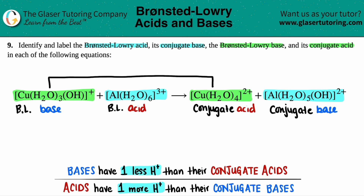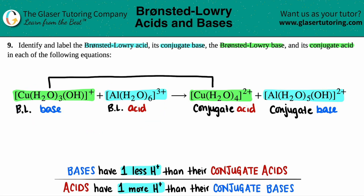If you've noticed, on one side of the equation it's one base and one acid, and on the other side it's one acid and one base. If you have two bases or two acids on one side of the equation, go back — something went wrong. You've got to have one and the other. So hopefully this helped. This one was a little tricky, but it didn't get us. I hope you're having a great day — let's keep studying hard, and I'll see you in the next lesson. Bye-bye.